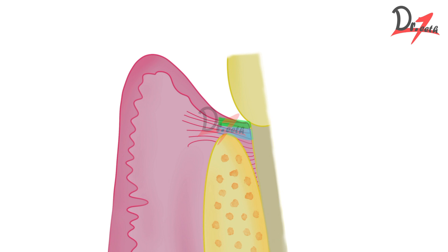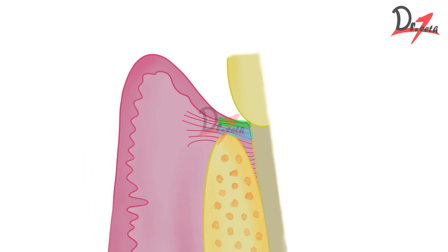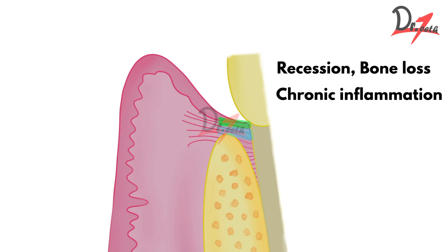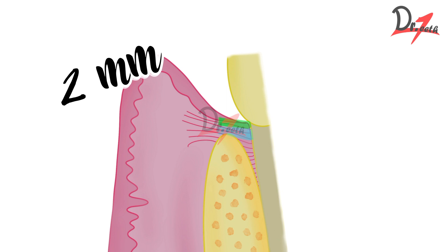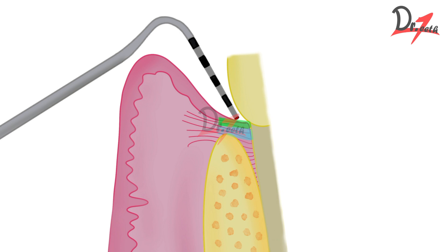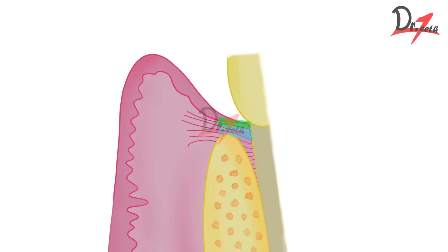This 2 mm of biological width is important and we have to maintain it. You cannot encroach upon this width — you cannot place the margins of your restoration in a way that encroaches upon this space. If you do so, there can be recession, bone loss, or persistent inflammation. For convenience, we also add the sulcular depth of 1 mm, so we say a biological width of 3 mm should be maintained to be on the safe side.